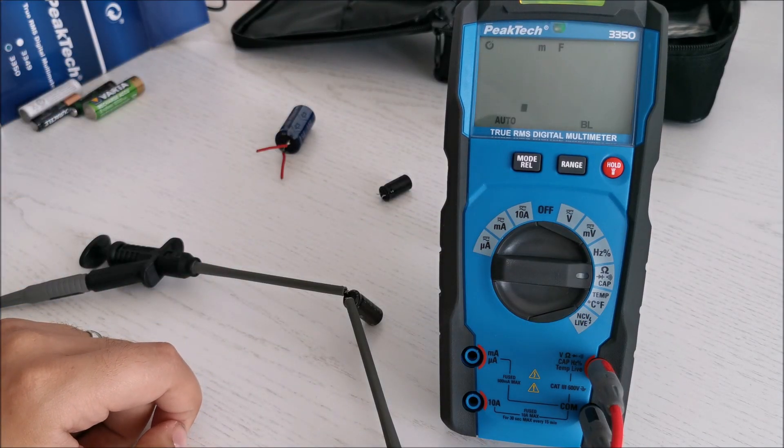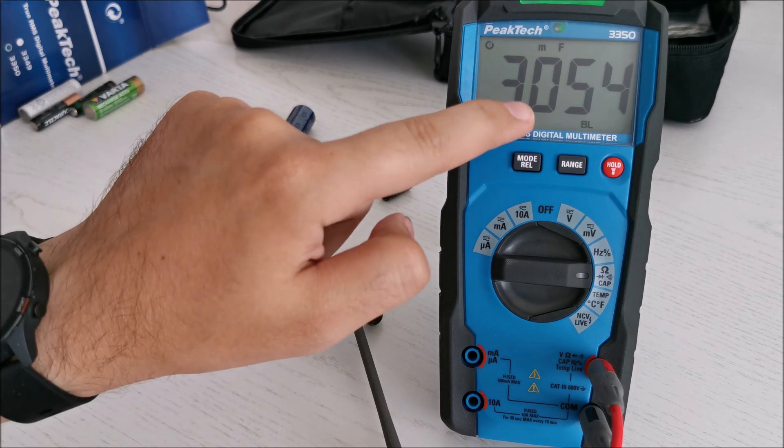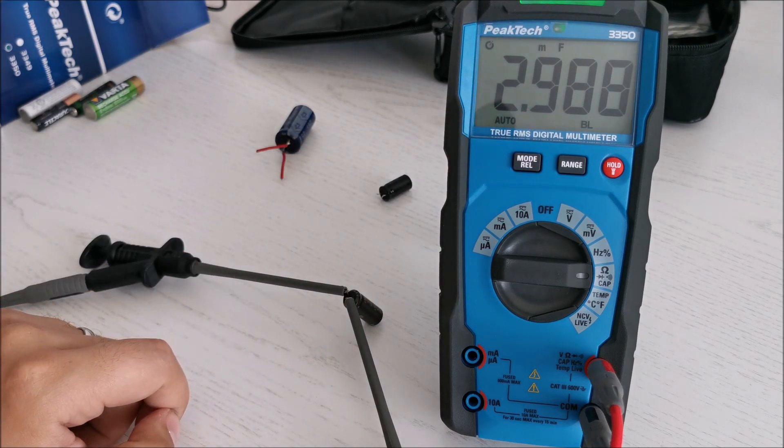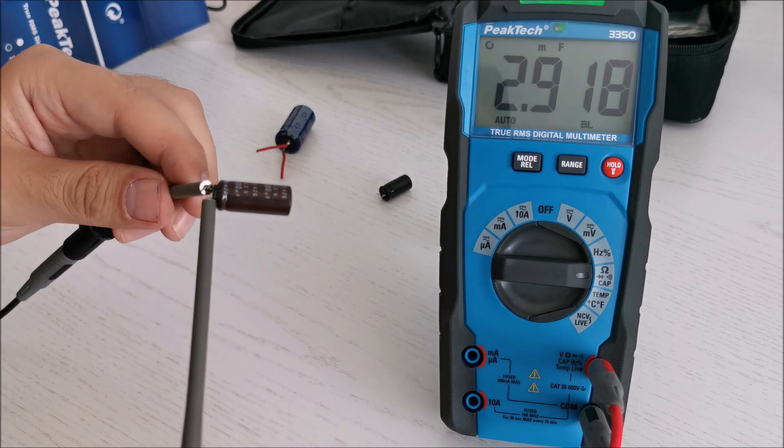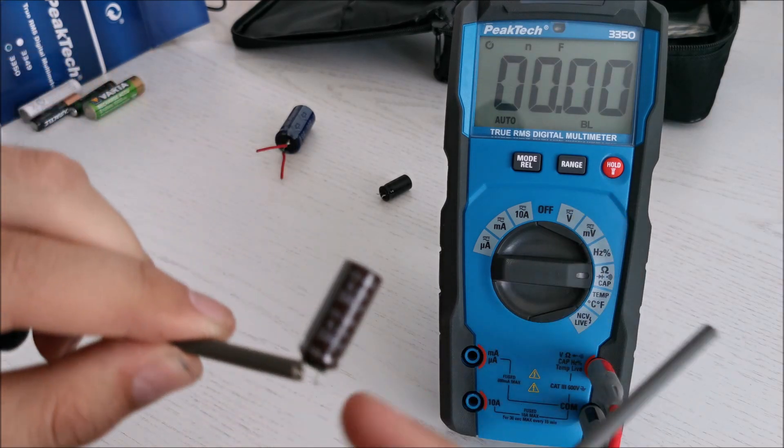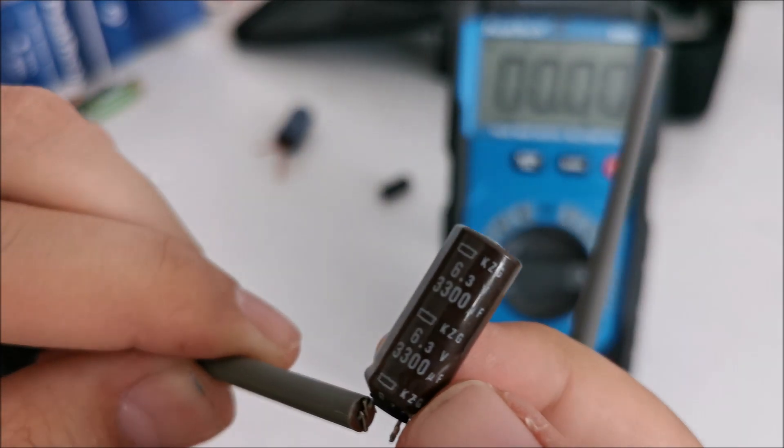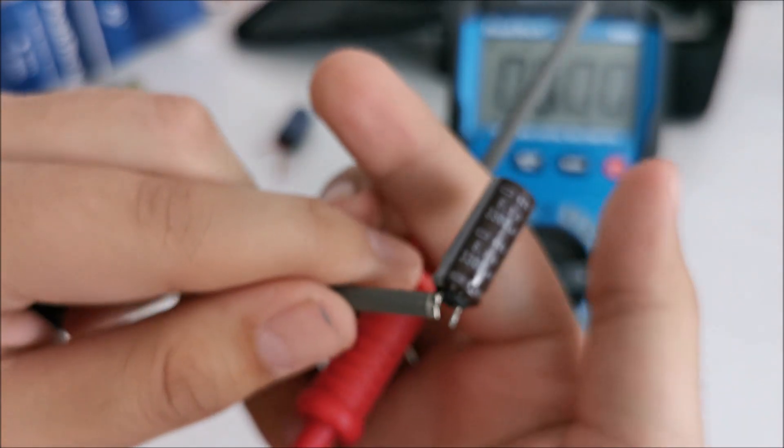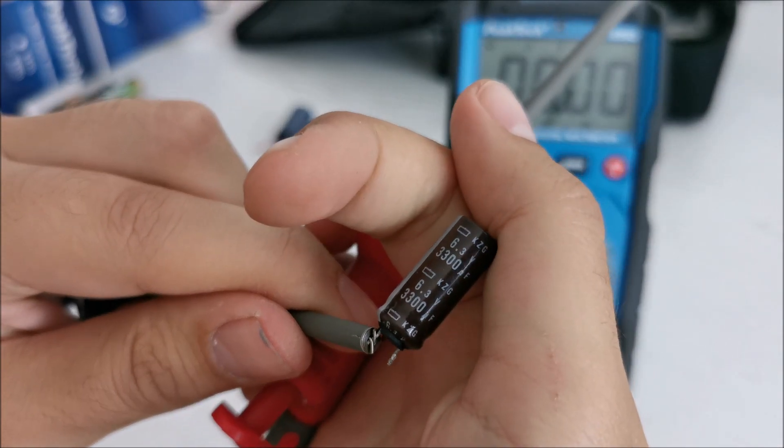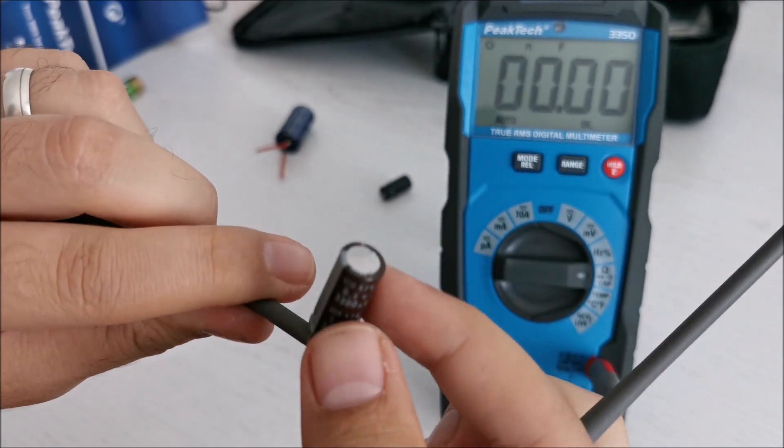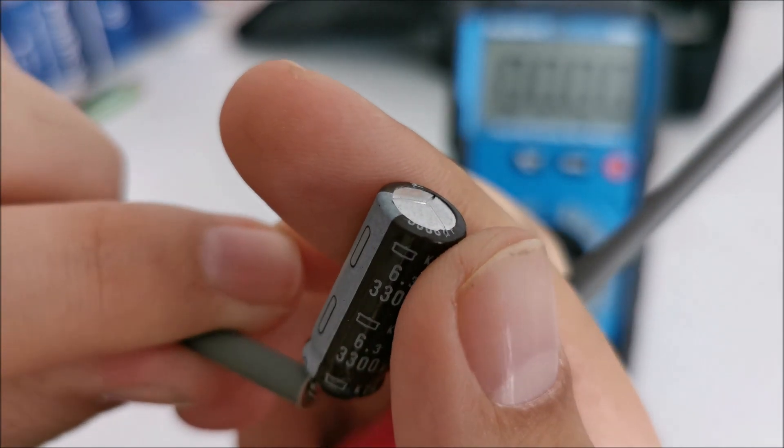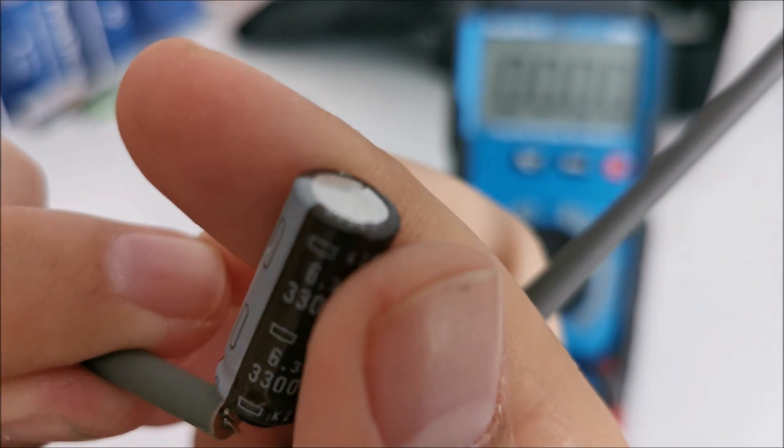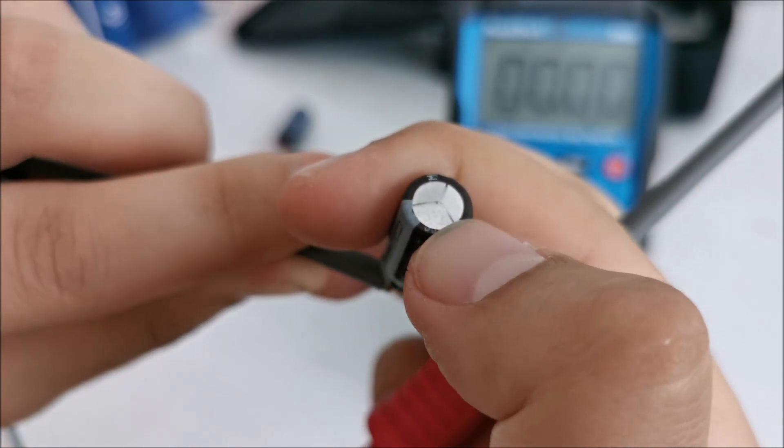So it went into millifarads. And we have 2.9 millifarads. Let's check on this. It should be 3.3 millifarads or 3300 microfarads. So this isn't what it used to be and I will show you why. Do you see it? Yep! It's bloated.